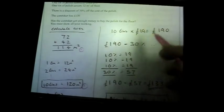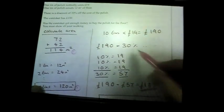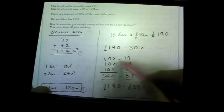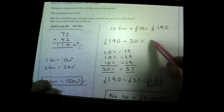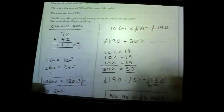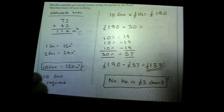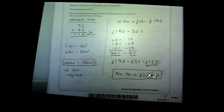10 tins at £19 each is £190, but there's a 30% discount. 10% of 190 is £19, so 30% is £57. 190 minus 57 = £133. He's only got £130, so no — he is three pounds short. This question has a star, meaning you get marks for quality of communication and working. It must be set out in a neat, logical way — if it's messy you will not get that extra mark even with a correct answer.